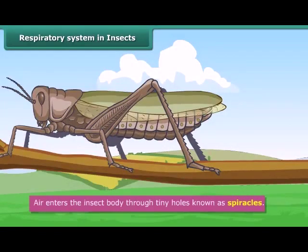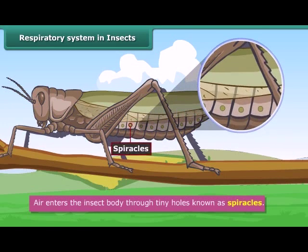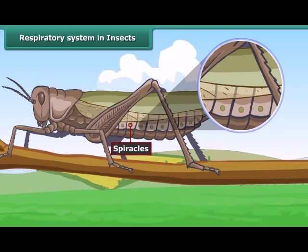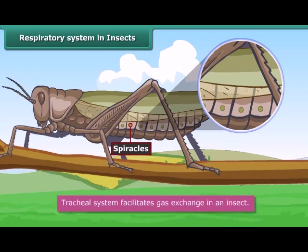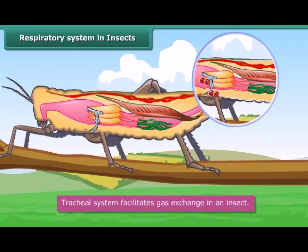Air enters the insect body through tiny holes present on the sides of the body. These holes are known as spiracles. The spiracles open into a network of thin air tubes spread over the body of an insect. These tubes are known as the trachea, and they facilitate gas exchange. Oxygen reaches the cells through the tracheal system, and carbon dioxide is received from the cells by the tracheal system and expelled through the spiracles.